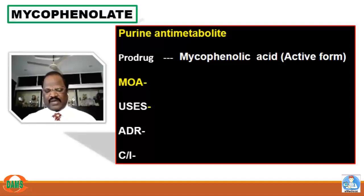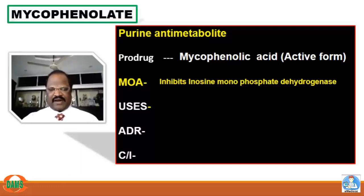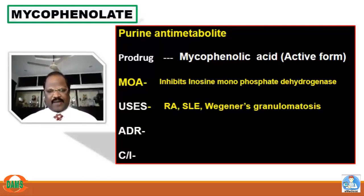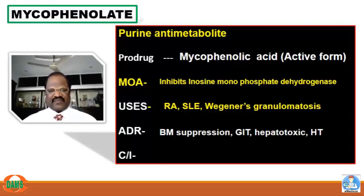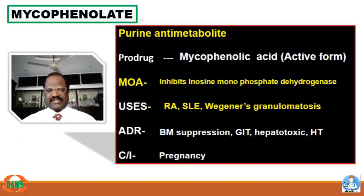The mechanism of action of mycophenolate mofetil is inhibiting inosine monophosphate dehydrogenase (IMPDH). As an immunosuppressant, it is useful for rheumatoid arthritis, SLE, and Wegener's granulomatosis. The most common problem is myelosuppression (bone marrow suppression). It also causes GI toxicity, hepatotoxicity, and hypertension. Mycophenolate mofetil is contraindicated in pregnancy.